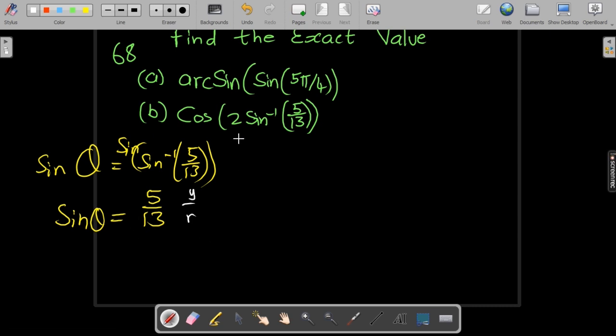We need x because we are assigning theta to this part here, which means we can replace our theta there. So this question is essentially cos of 2θ. But what is theta? Theta is arcsin of 5 over 13.